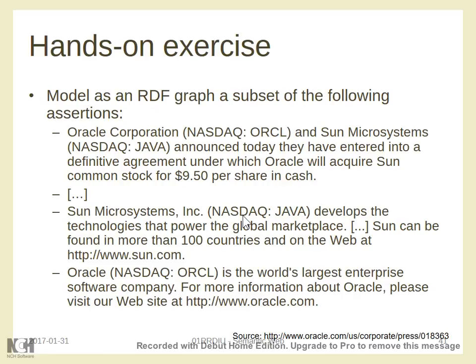What are we talking about here? We are talking about two companies, an acquisition between two companies, and also the announcement of this acquisition — three separate concepts. The fact that one company acquired the other is one fact; that this acquisition was announced on a specific date is separate information. All other information is about either a company or the acquisition itself. So we have four main nodes: company one, company two, the acquisition, and the announcement.